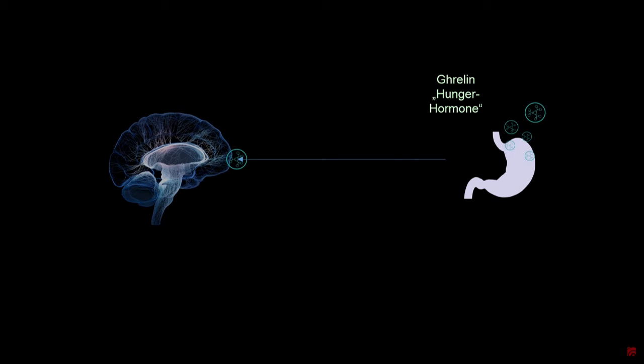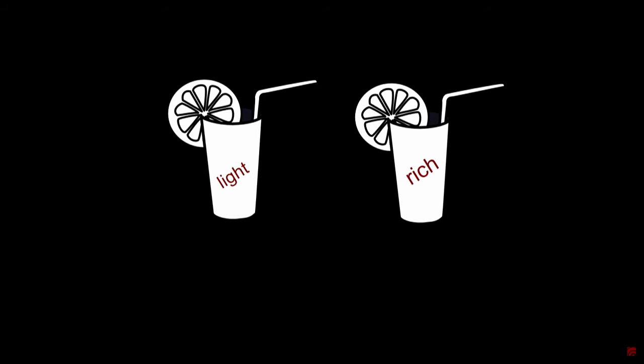Researchers wondered: can you influence hormone production in the body by changing your assumptions? They presented hungry participants in the laboratory with two milkshakes — one labeled 'rich' and the other labeled 'light.' But unbeknownst to the participants, those milkshakes were exactly identical. The only difference was the label.